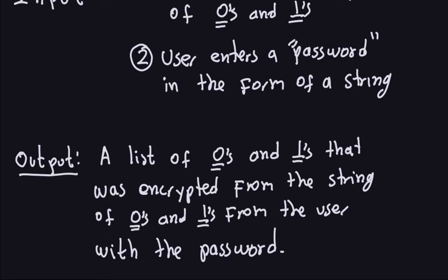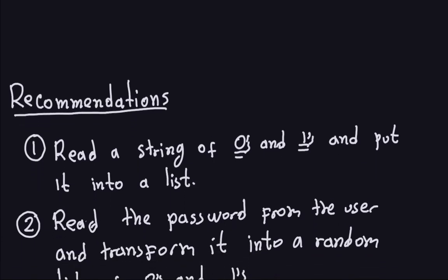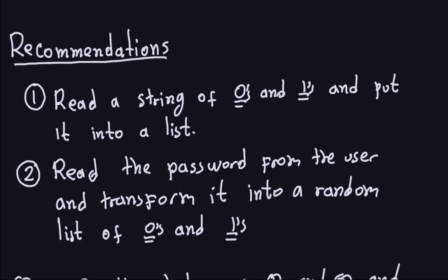Now I have some recommendations for how to write this program. Whether you follow them is up to you — if you think you can do it some other way while still using the correct inputs, outputs, and data handling, please do it. My first recommendation is to read the string of zeros and ones from the user and put it into a list. I think it's easier that way, but if you disagree you can do it another way.